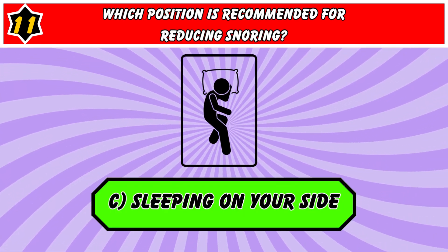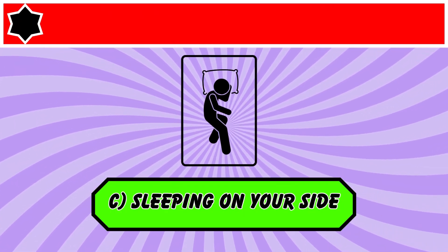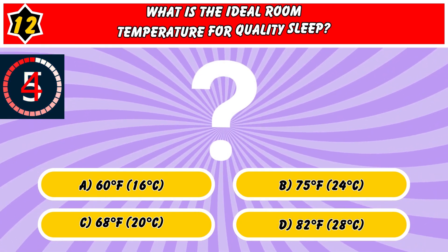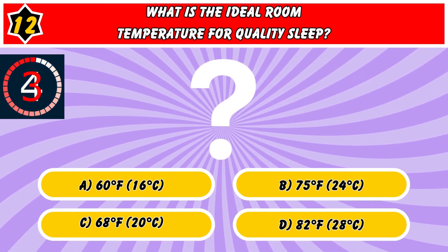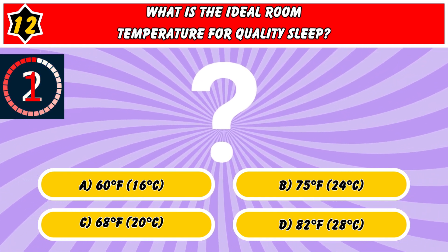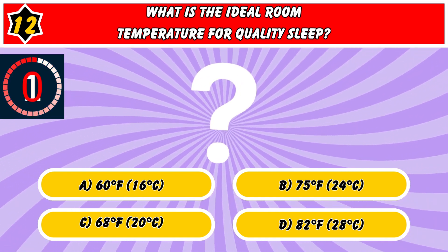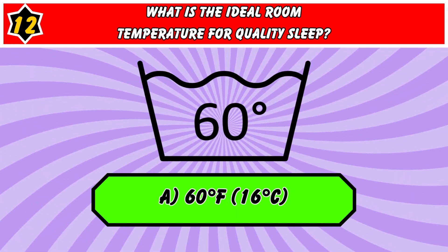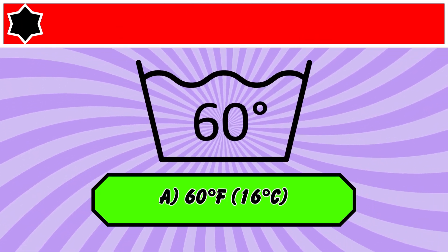Which position is recommended for reducing snoring? Sleeping on your side. What is the ideal room temperature for quality sleep? 60 Fahrenheit, 16 Celsius.